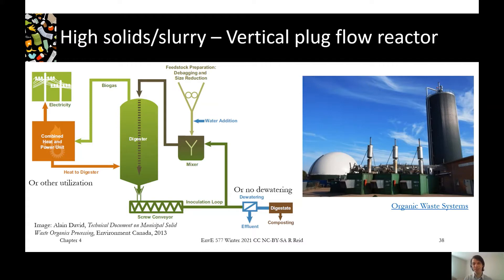The picture on the right shows an example of a vertical system, which looks similar to the wet AD with a big vertical tank, though the material moves differently than in a continuously stirred system. On the ground you can see three engines using the biogas, and on the left of the photo there's a holding tank for the finished digestate with a flexible top to capture the gas.